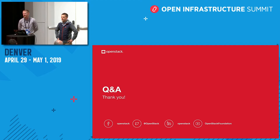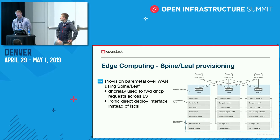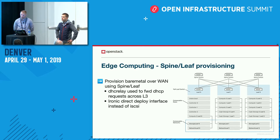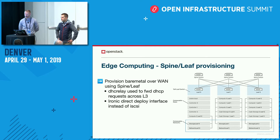Q&A: Regarding the spine-leaf slide that showed composable roles and composable networks for leaf nodes — given that routed overcloud networks are now supported, is there still a reason to need those composable roles and networks? That was an open question, and it's possible the graphic was simply reused from a previous version.